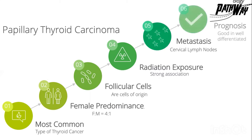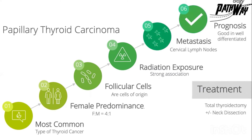Number six, the prognosis is very good in well-differentiated types. The treatment is either subtotal or total thyroidectomy, plus or minus neck dissection.